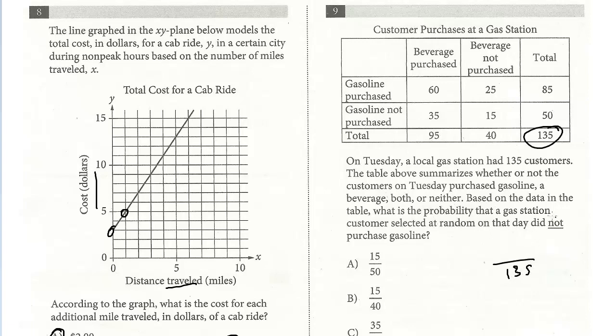That's the total. And we want to see what's the probability of those 135 that a customer did not purchase gasoline. And so gasoline not purchased—again, we're not paying attention to whether they purchased a beverage or not. We're just looking at the total number and it's 50.